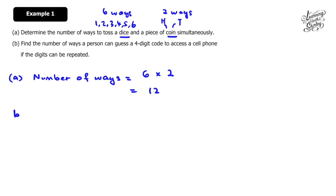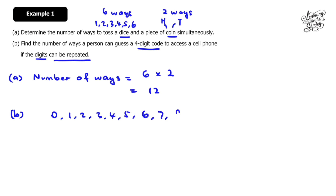Let's solve for B. Find the number of ways a person can guess a four-digit code to access a cell phone if the digits can be repeated. So how many digits can we choose from? 0, 1, 2, 3, 4, 5, 6, 7, 8, and 9 — we have 10 digits to choose from. They're asking you to guess a four-digit code, so I'm going to draw four lines.